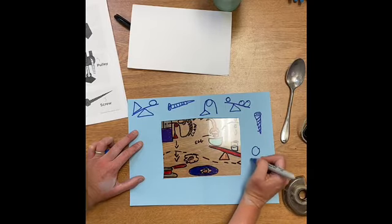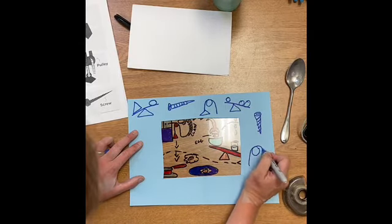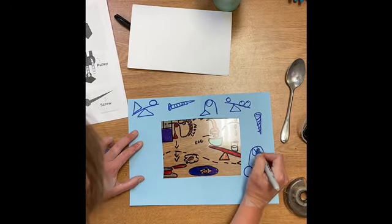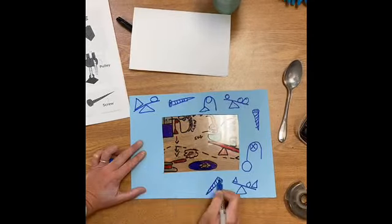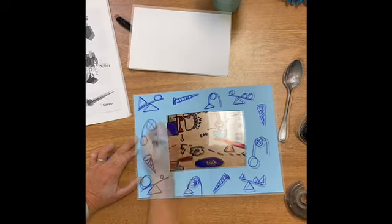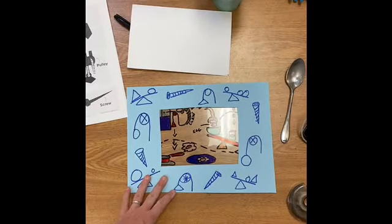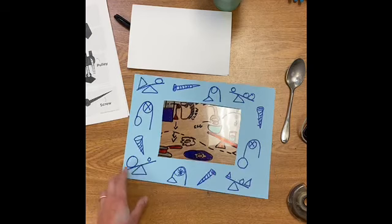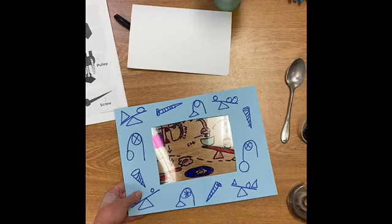Now I'm gonna make another pulley, and I'm gonna keep working like that until my artwork is complete. All right, now my artwork is done and it's ready for display. I have an invention that I've translated on transparency paper, and then I designed a frame that has examples of simple machines that are put into patterns.